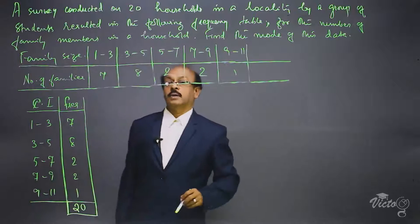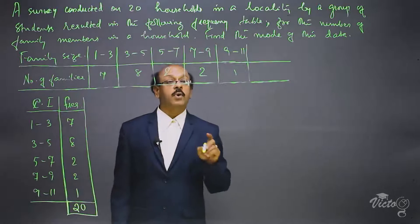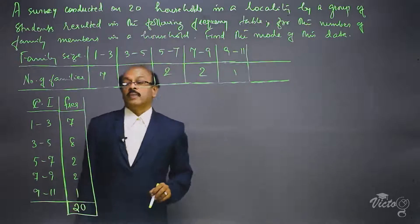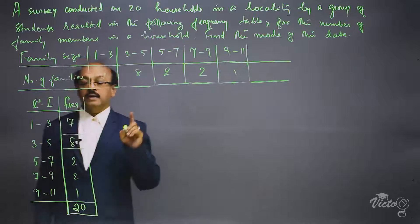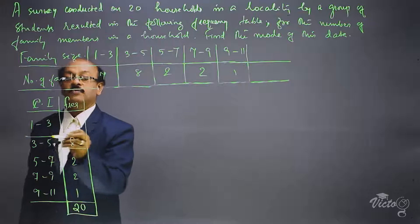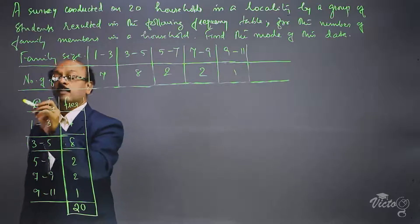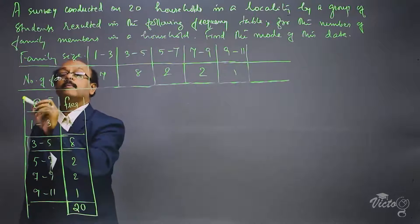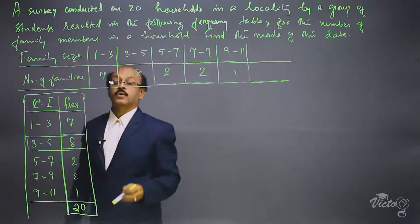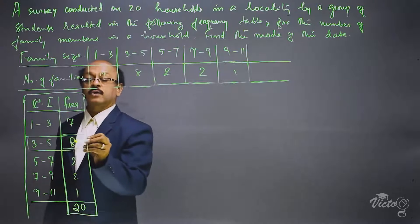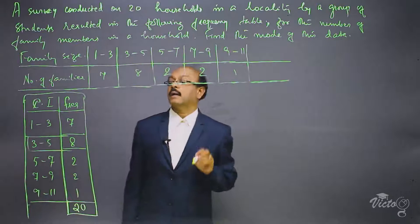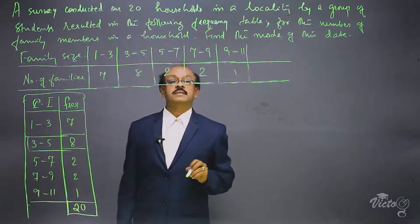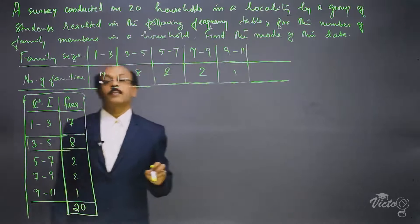Now we have to find the mode, so first we have to find the modal class. The highest frequency is 8 in the given set of observations, and hence the modal class is 3 to 5.